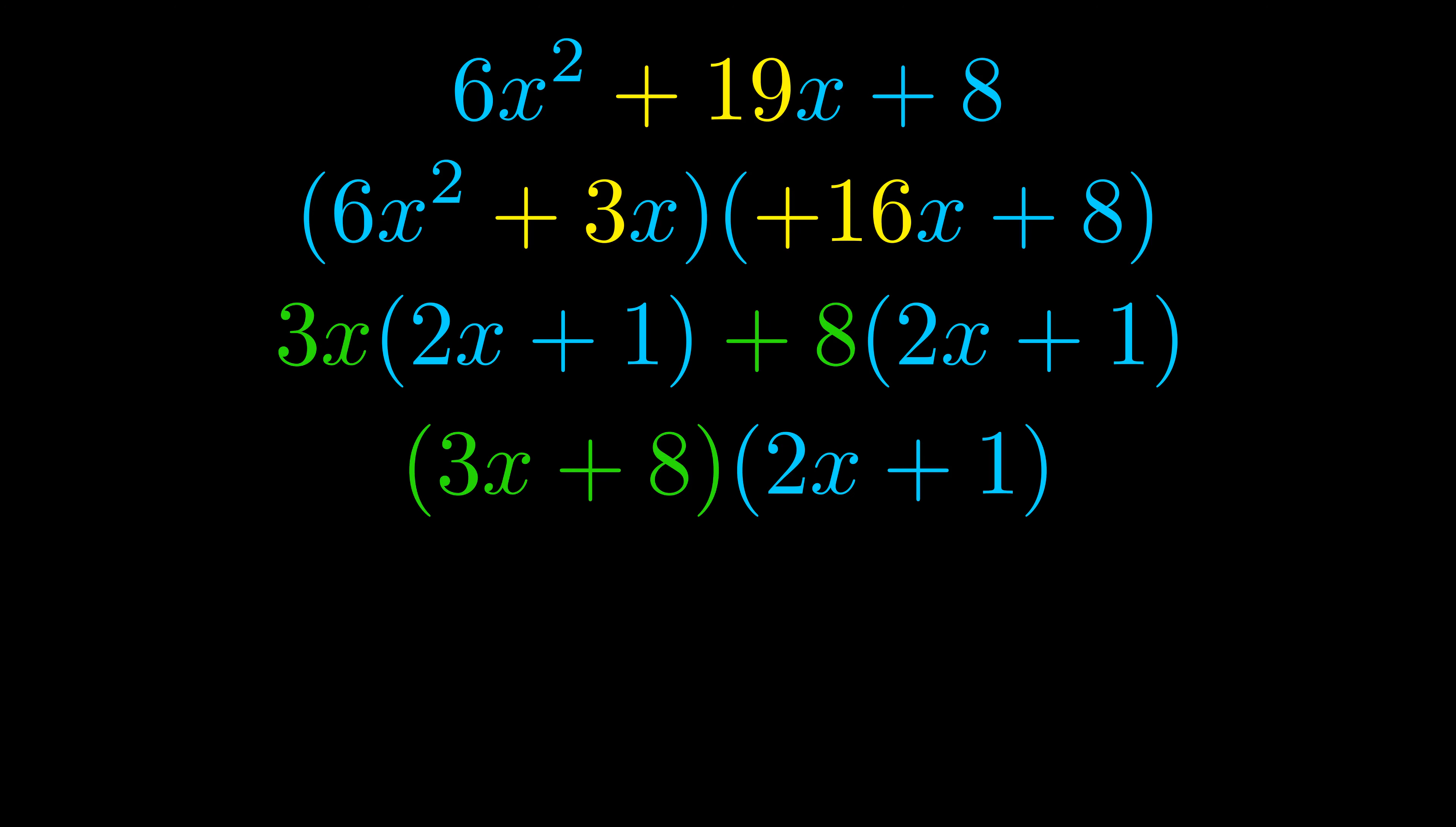The blue values are the same. Those blue values will become one of our factors and we will combine the two green values, the GCFs that we pulled out, to get the other one. And that is our fully factored equation.